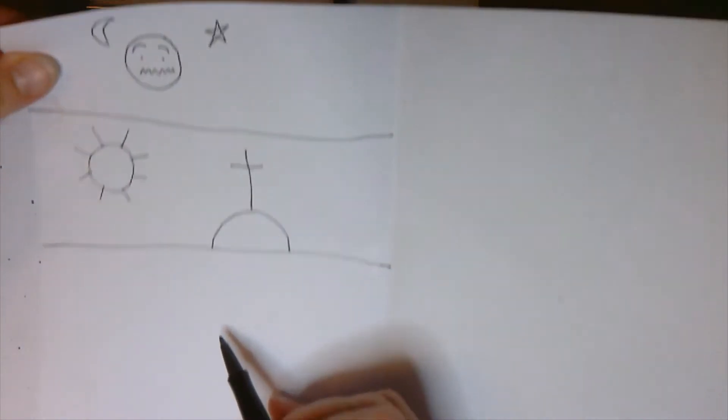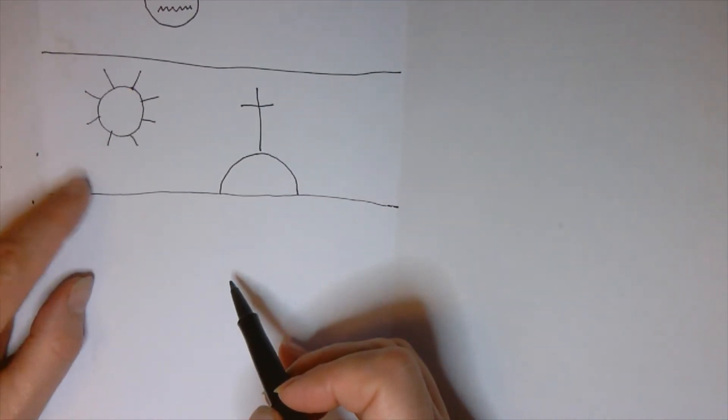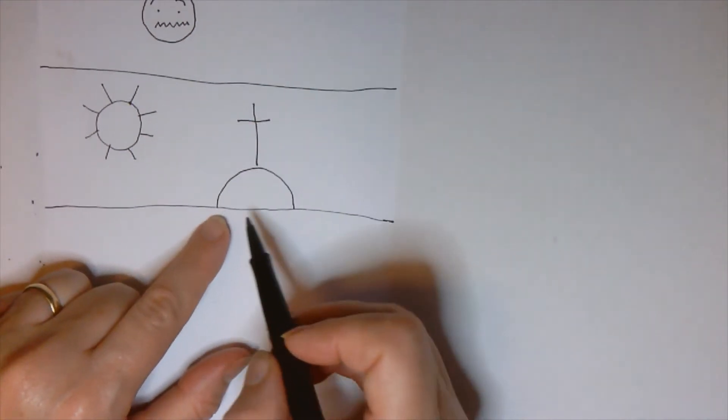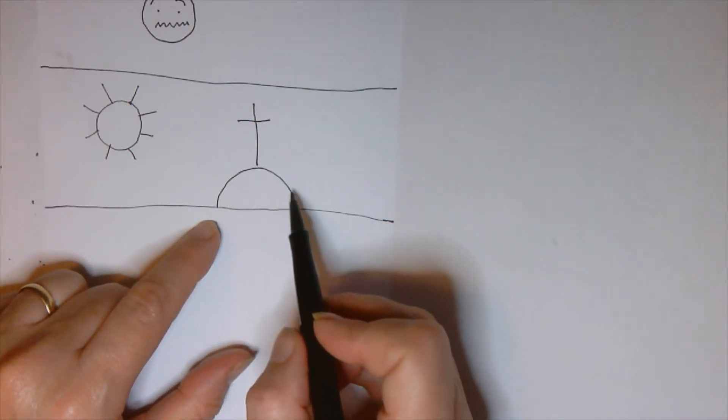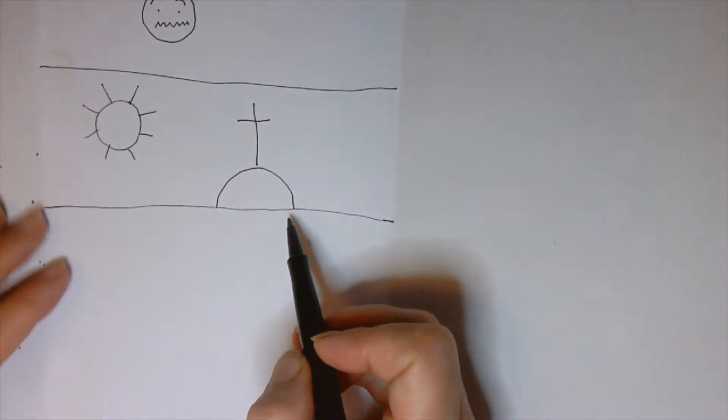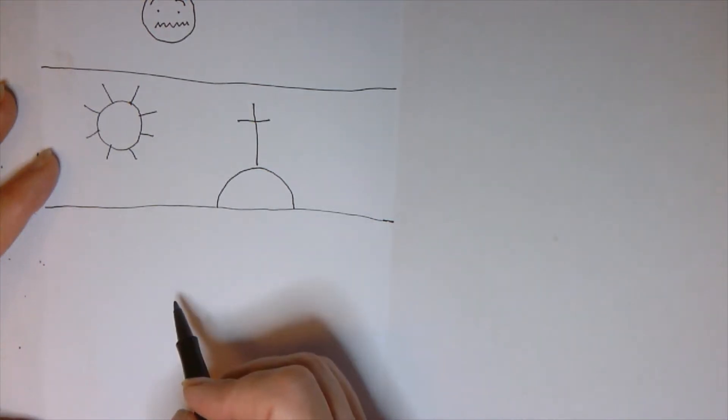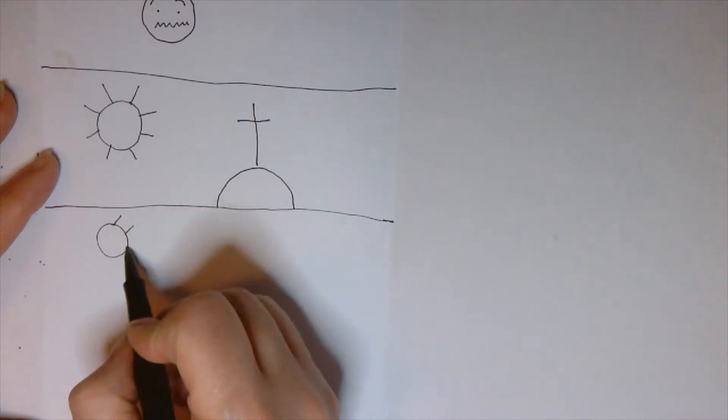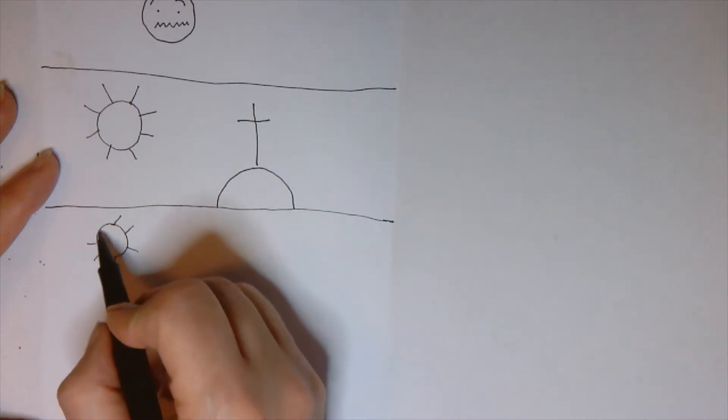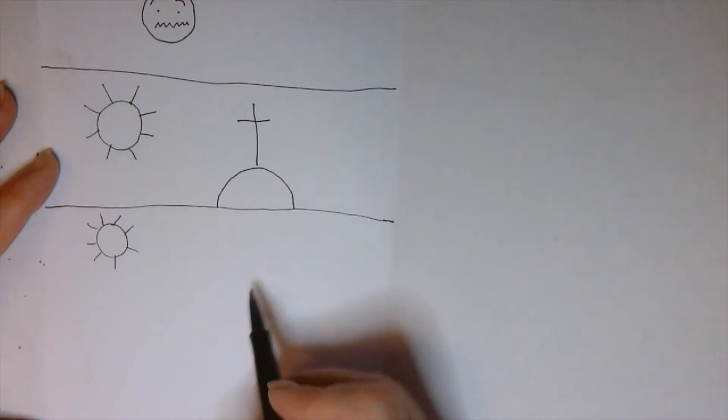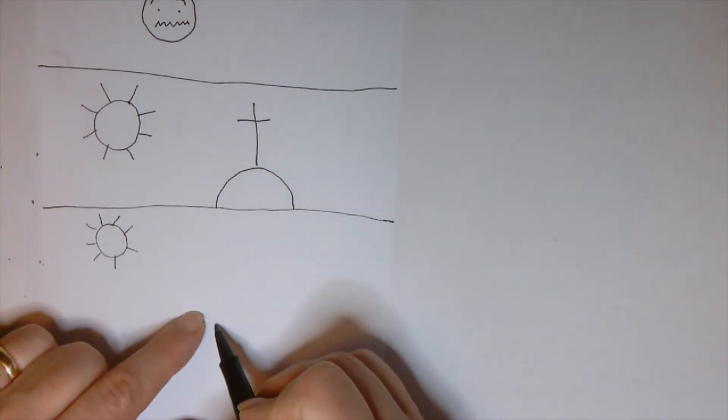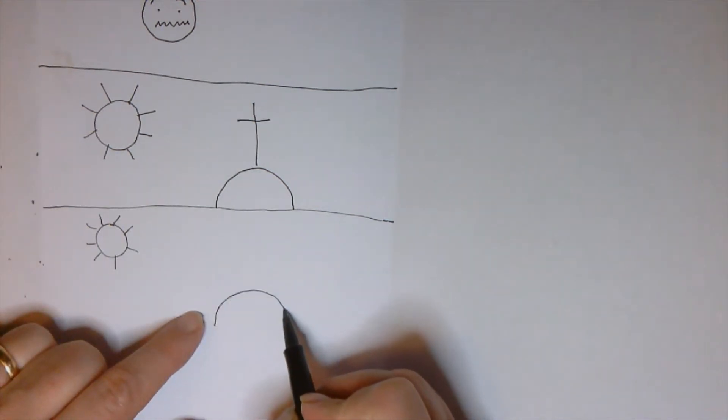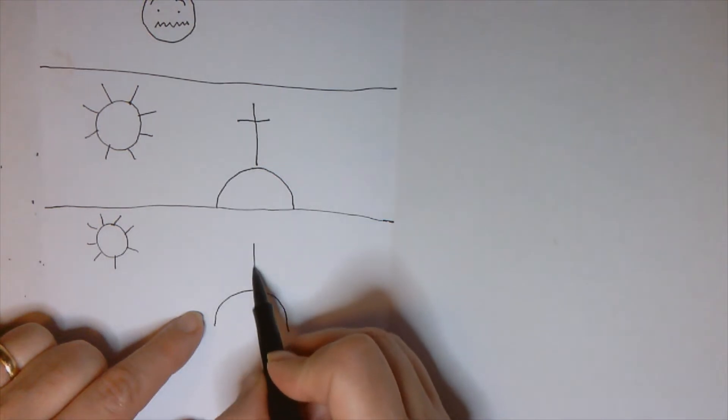So then the next part here, we're going to start by drawing this again. And I didn't explain this actually very well. Do you see how that looks like an upside down U? We're going to be doing a lot of U's here. So the next thing we're going to do now, we're going to put another sunshine, because it's still daytime, on this same day.